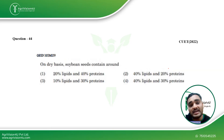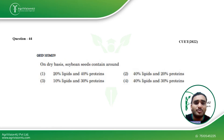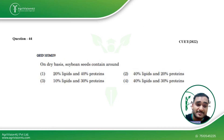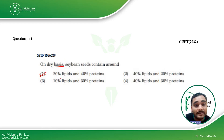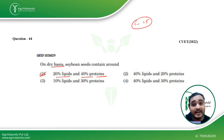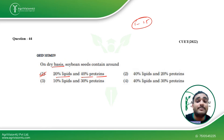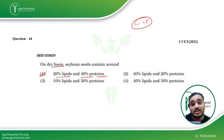Coming to the next question: on a dry basis, soybean seeds contain around — this is very specifically asked from the pulses section. We discussed this in our batch in November: soybean seeds on a dry basis contain about 20% lipids and 40% protein. We are having regular classes every day, around 1 to 1.5 hours of preparation daily. If you want to join our batch, you can — we discuss deeper insights on every topic and the possible format in which questions can be asked in the exam.